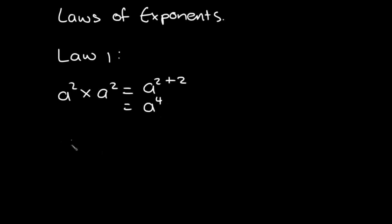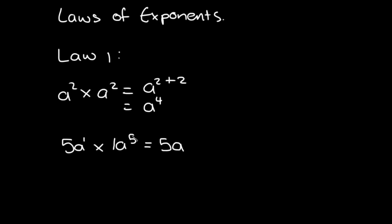Looking at another example: we're given 5a times a to the power of five. When we have just ordinary 5a, we know the power is one — there's a hidden one there. There's also an invisible one in front of the variable a. So we deal with the number first: five times one is just five. Then we have a to the power of one plus five — the bases are the same so we add the exponents — giving us five a to the power of six.